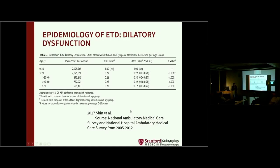Dilatory dysfunction of the eustachian tube has three potential causes. The burden is significant: some cite 1% prevalence based on pediatric Bluestone data extrapolated to adults. A study by Shin and Poe's group found about 2 million visits per year for problems like eustachian tube dysfunction, otitis, network diffusion, and retraction. This is interesting but requires more study — we don't know the cost per visit or whether it's the same patients returning repeatedly.